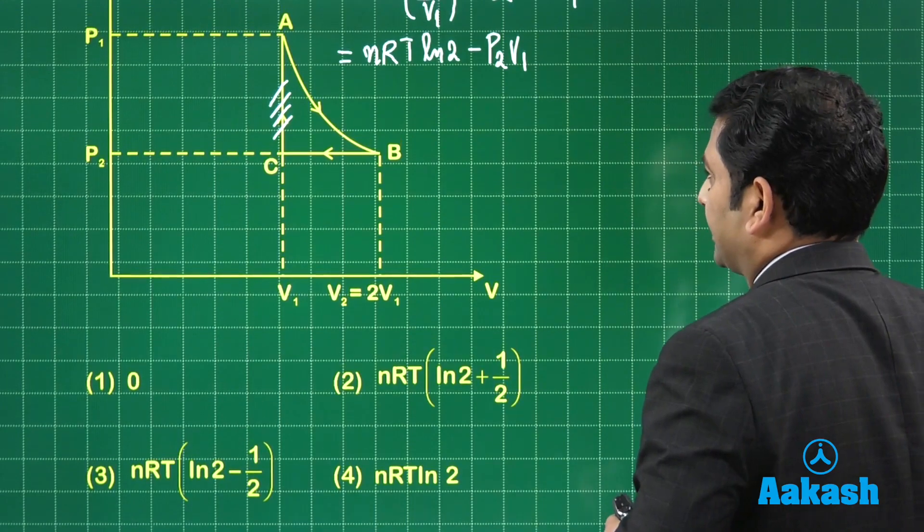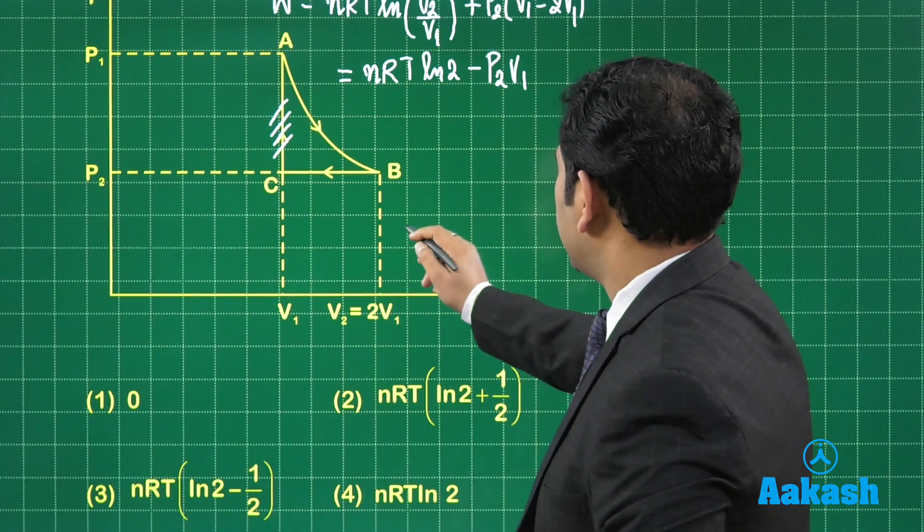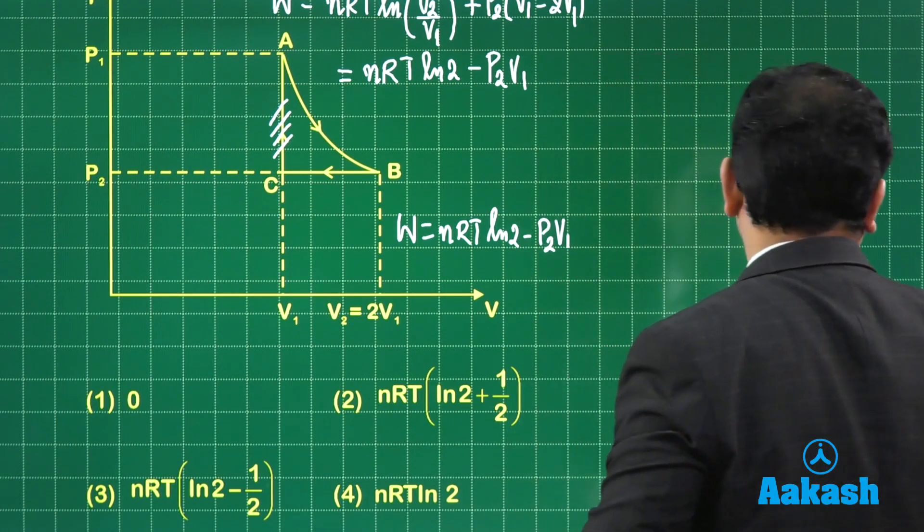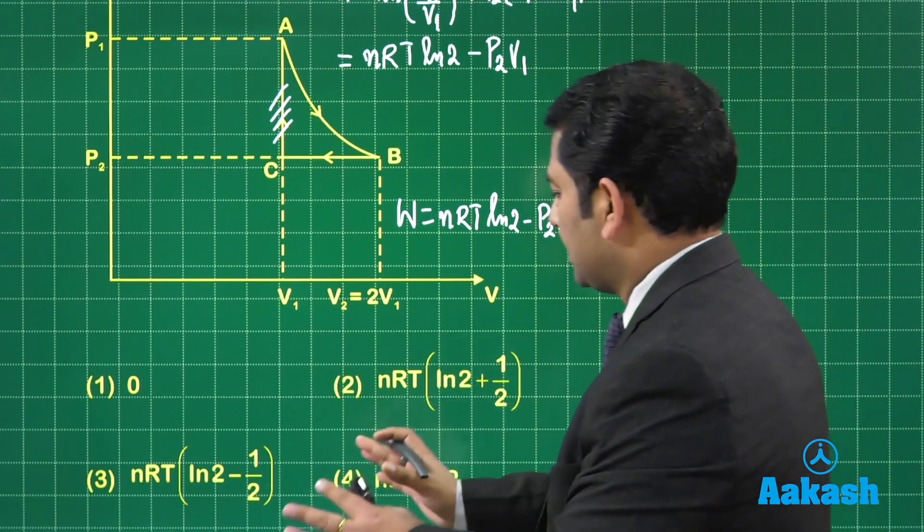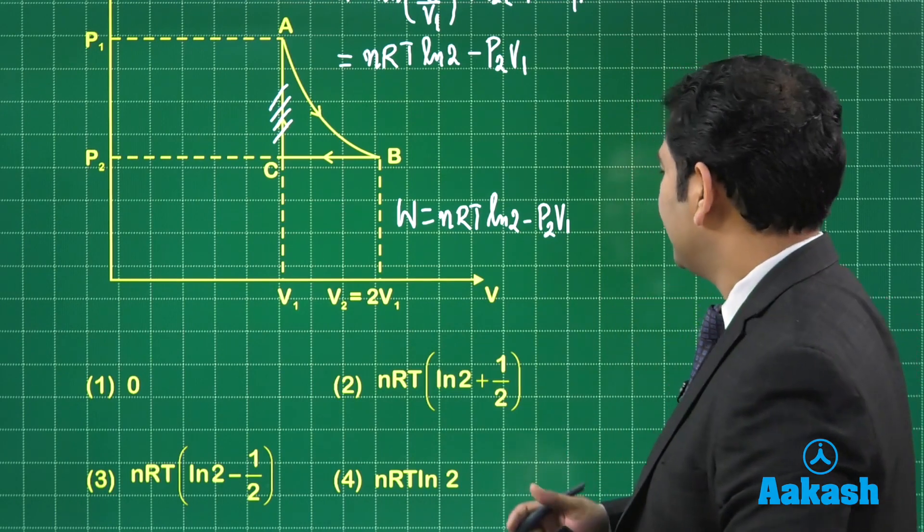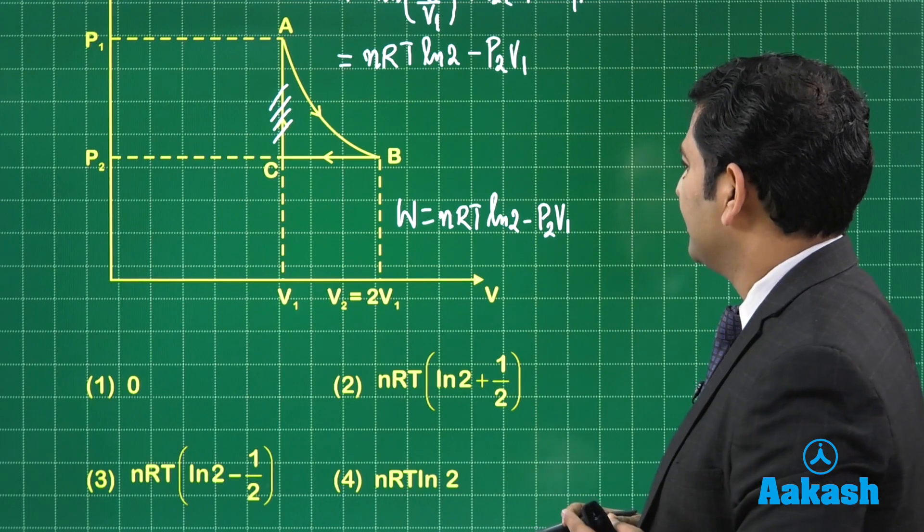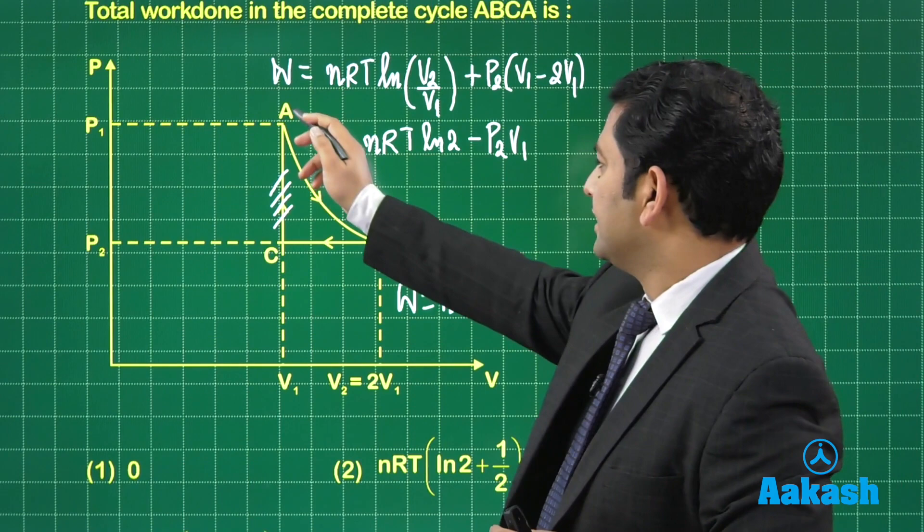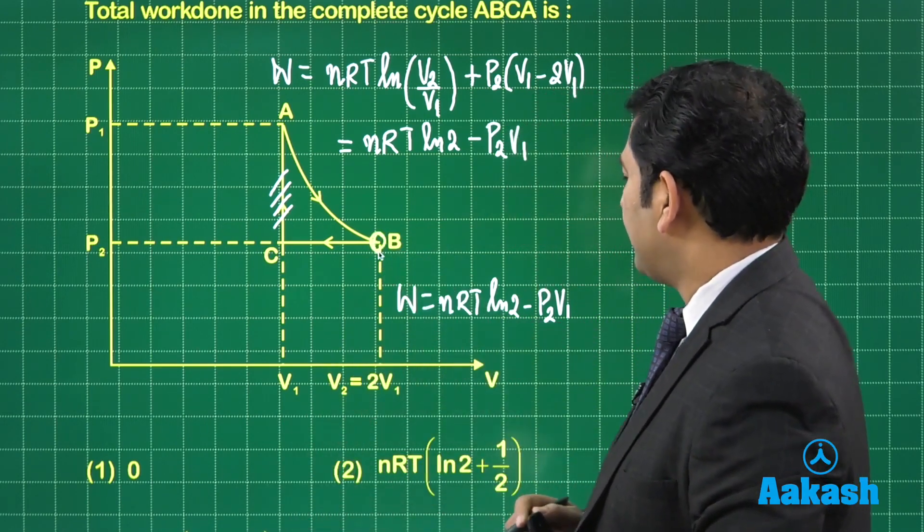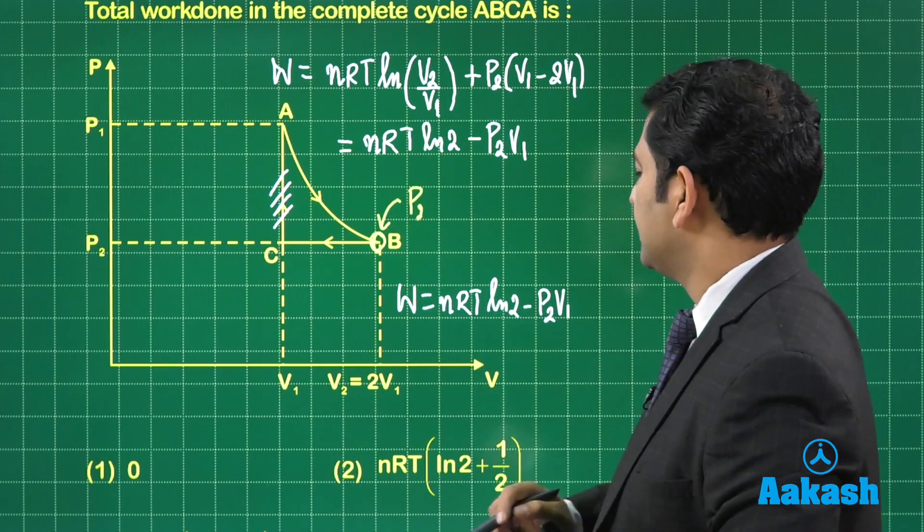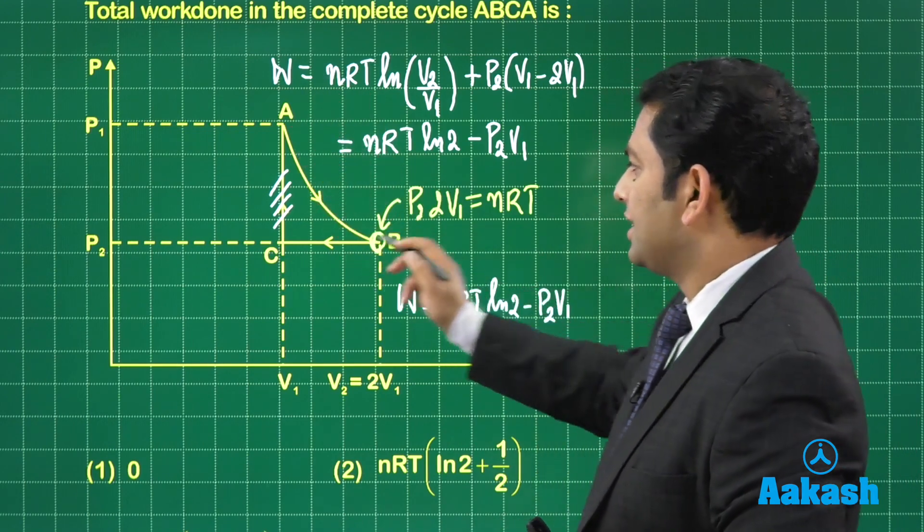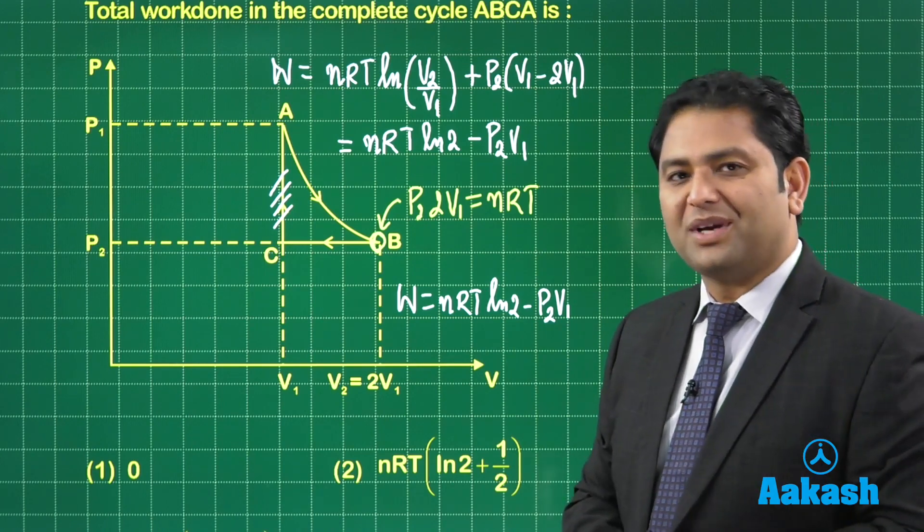If you look at the option, the option demands the entire answer to be brought in terms of T. We need to customize according to that. How do we go with P2 V1? That's quite simple because in the entire isotherm, the temperature is constant. If I talk here, the pressure is P2, the volume is twice V1. That equals NRT because everywhere the temperature throughout the isotherm is T. I can always use the expression PV equals NRT.